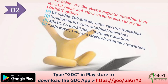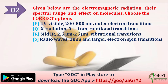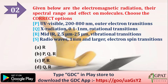The next question: given electromagnetic radiations and their spectral ranges and effects on molecules, choose the correct options. P is UV-visible, 200–800 nm, outer electron transitions. Q is X-radiation, 0.1–1 nm, rotational transitions. R is mid-IR, 2.5–25 micrometers, vibrational transitions. S is radio waves, 1 mm and larger, electron spin transitions. The options are: A: P; B: P and Q; C: P and R; D: P, Q, and R. The correct answer is option C — P and R: UV-visible (outer electron transitions) and mid-IR (vibrational transitions).